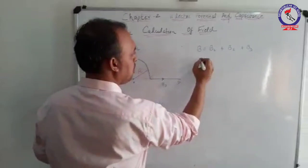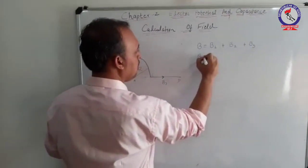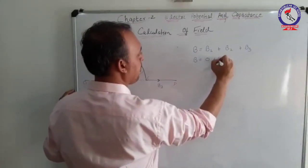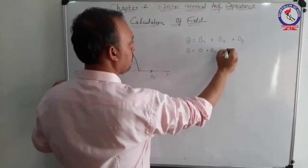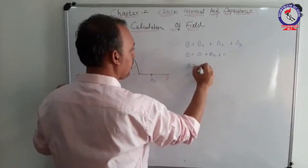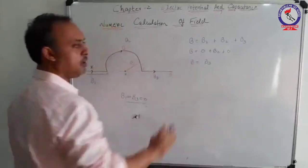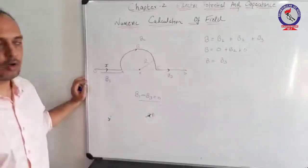Hence, the net field becomes equal to the field of a semicircular coil, that is B2.